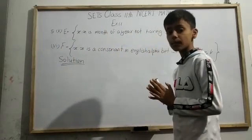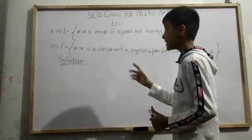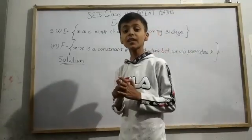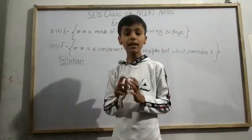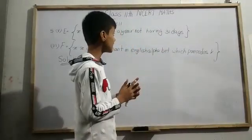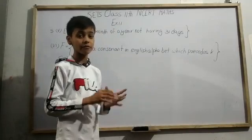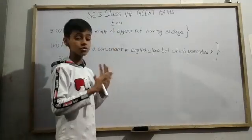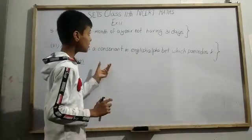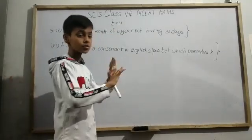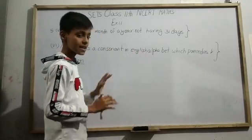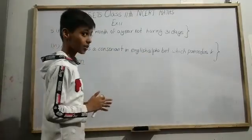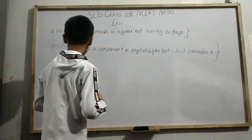Some description is given about it in set-builder form, that is: x is such that x is a month of a year not having 31 days. This means whichever months we have in a year — some have 31 days, some have less than 31 days — so whichever months do not have 31 days, those are all the elements of this set E. According to this, we have to list all the elements.